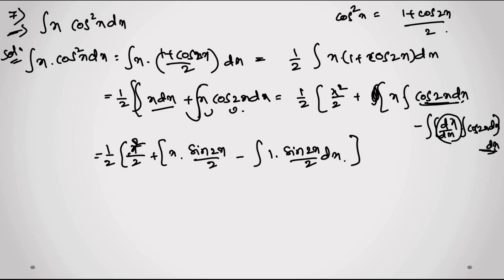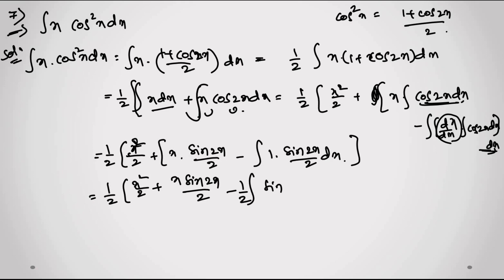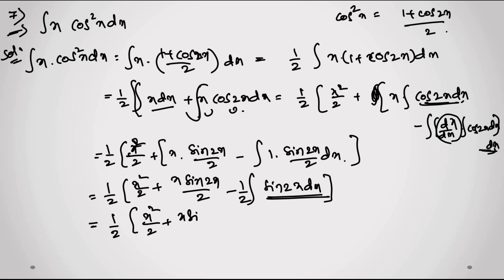So the IBP part gives x·sin(2x)/2 + cos(2x)/4. Putting it all together: (1/2)·[x²/2 + x·sin(2x)/2 + cos(2x)/4]. The integral of sin(2x) gives cos(2x)/2, and multiplying the denominators gives a factor of 4.